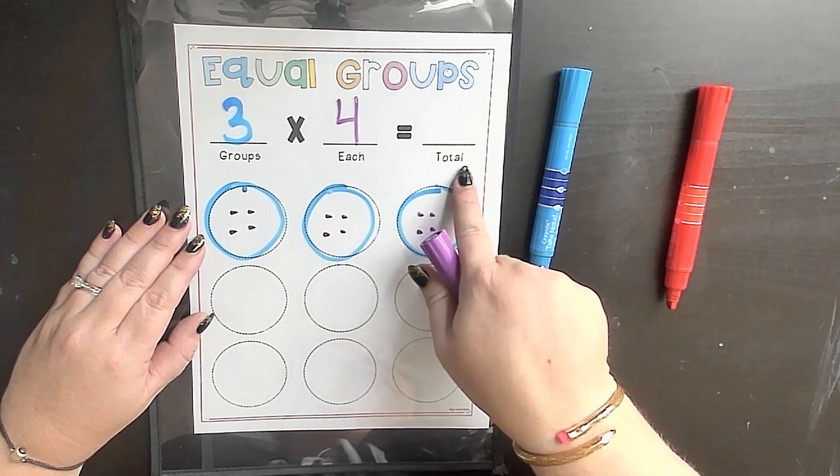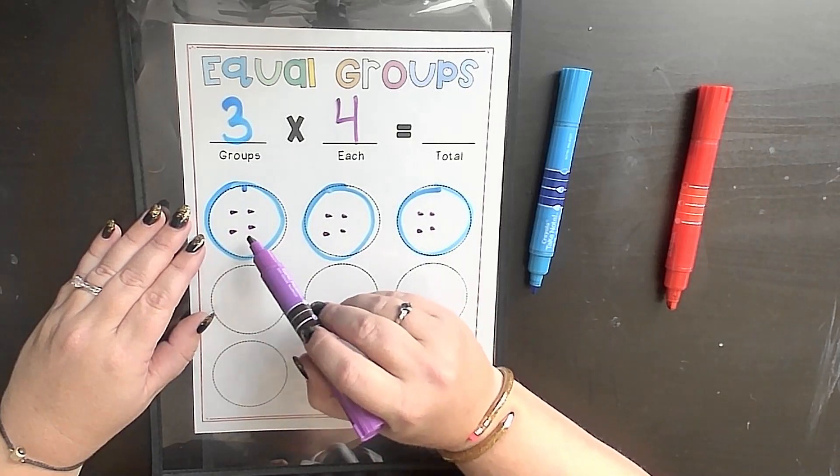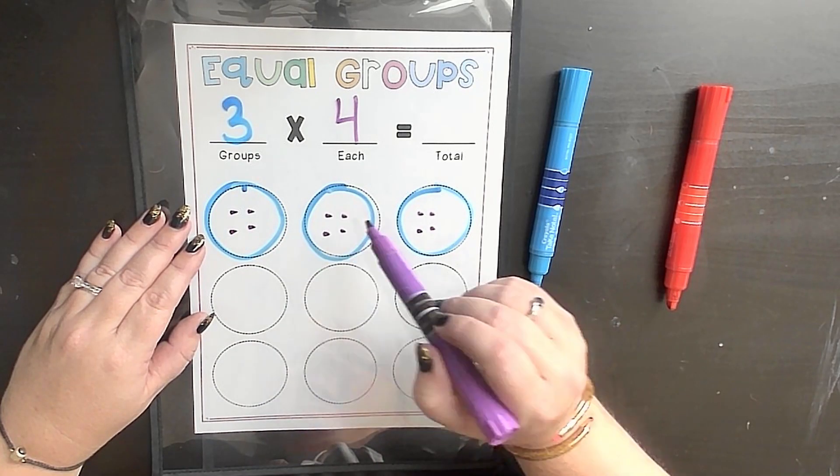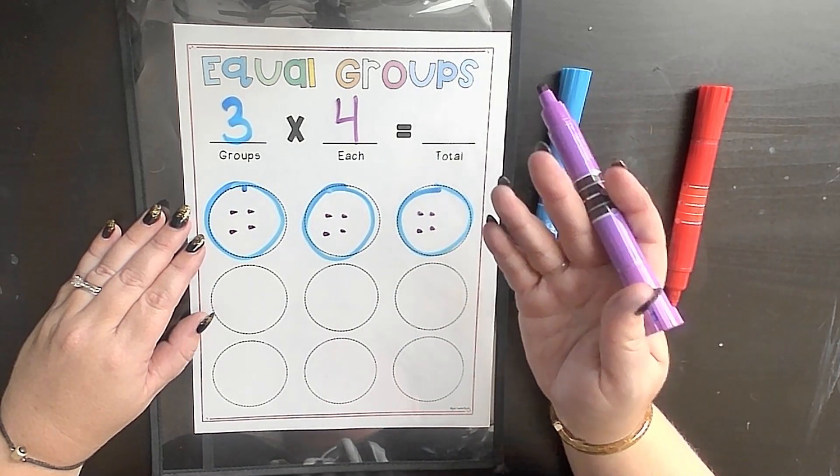Now is the fun part, finding our total or our product. I can count these up 1 by 1. 1, 2, 3, 4, 5, 6, 7, 8, 9, 10, 11, 12, or we can use one of those strategies we learned earlier with skip counting or repeated addition.